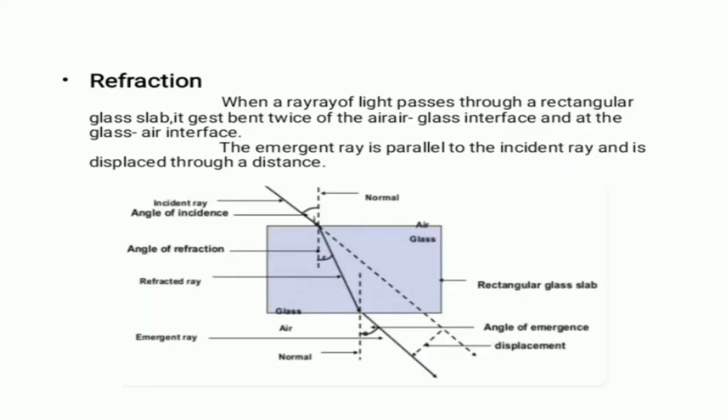Next point is refraction. When a ray of light passes through a rectangular glass slab, it gets bent twice at the air-glass interface and the glass-air interface. The emergent ray is parallel to the incident ray and is displaced through a distance.